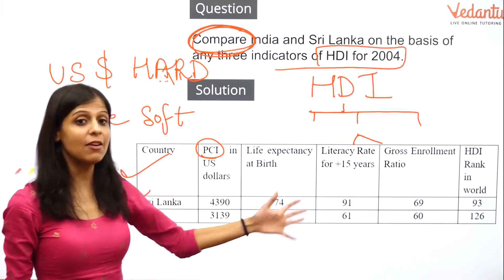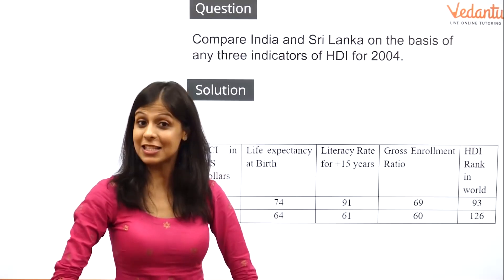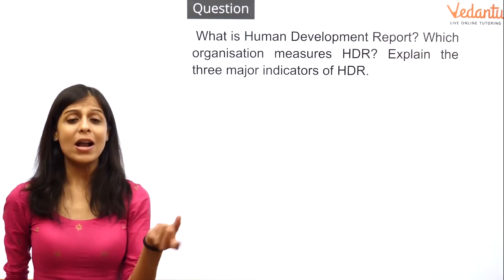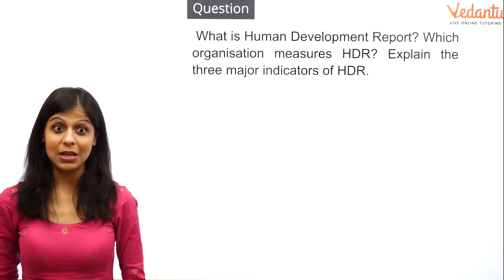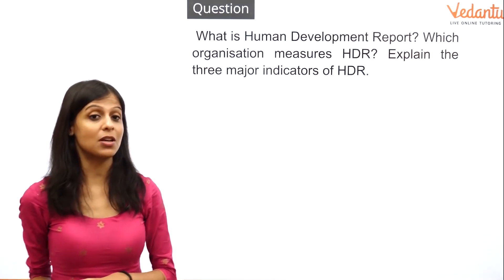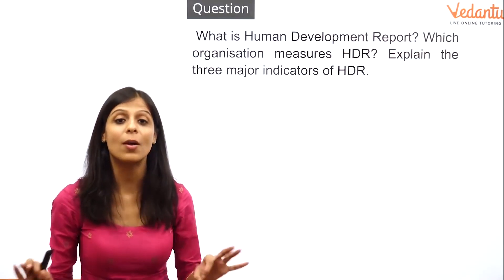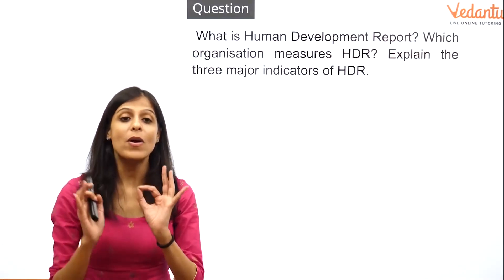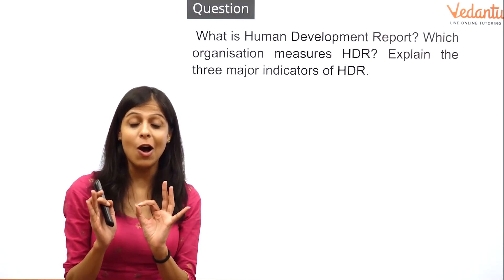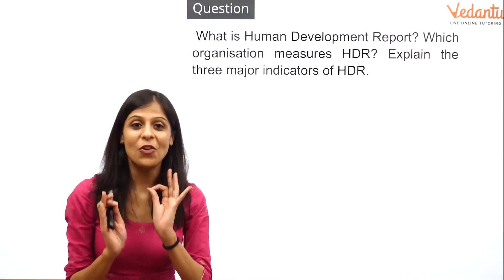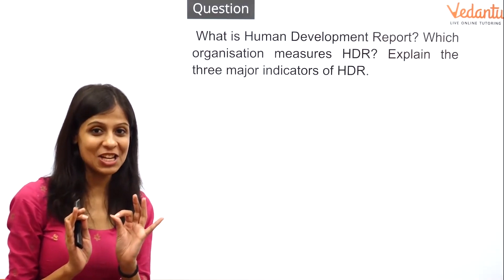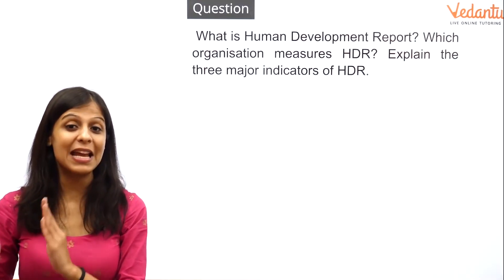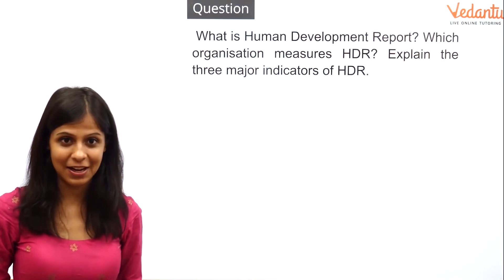Moving on to the second question: what is the Human Development Report? This chapter is all about development. The question also asks which organization measures the Human Development Report and asks you to explain the three major indicators.